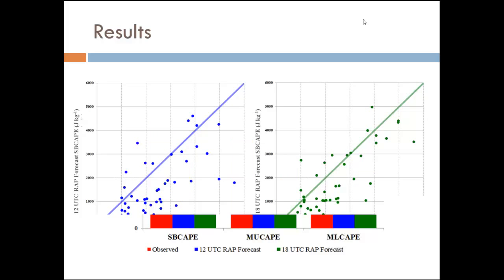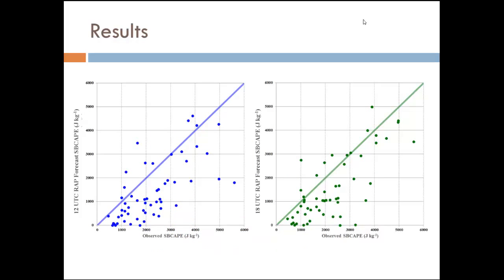Looking at it on a case-by-case basis tells you a lot more. The observed surface-based CAPE is on the bottom axis. On the Y-axis, the left panel shows the 12Z forecast surface-based CAPE valid at 0Z, and the right panel shows the 18Z forecast. I included all 56 cases so you can see the ones that were overestimated. I have the X equals Y line on there — essentially a perfect forecast — to give you an idea how many were below and how many were above.